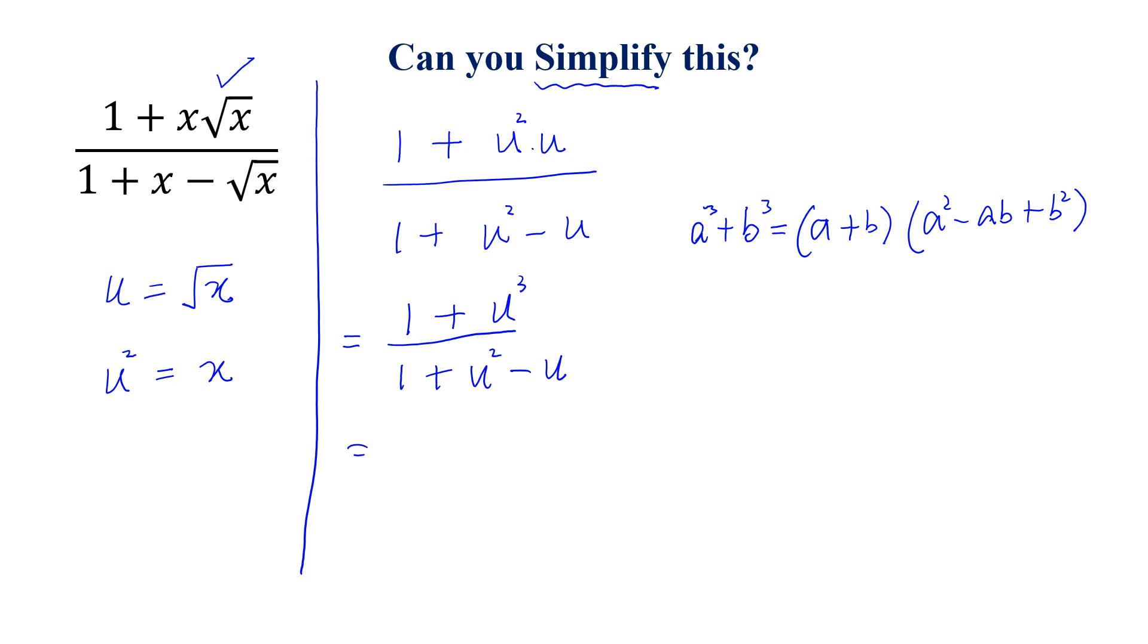we can write 1 plus u cube is equal to 1 plus u times 1 minus u plus u square, divided by 1 plus u square minus u.